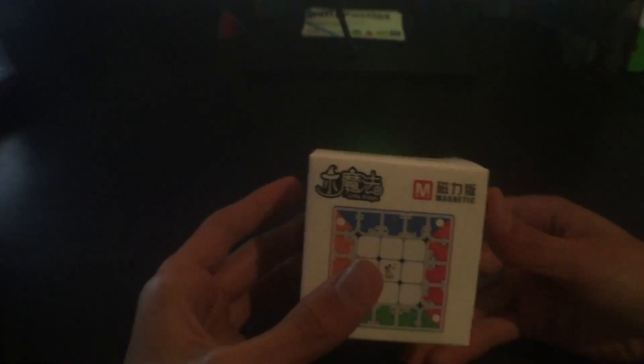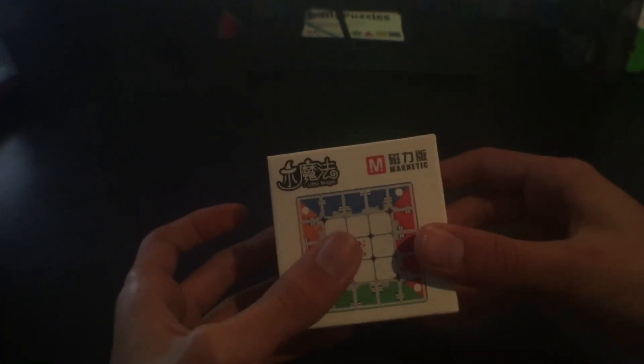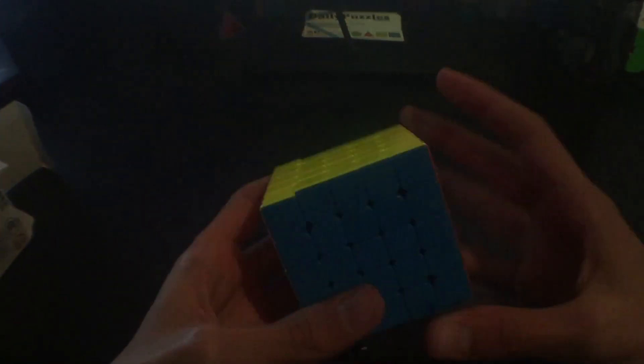Now finally on to the YuXin Little Magic M, so this is the puzzle I've been waiting for, the magnetic 5x5 which I have tried at comps and it does appeal to me a lot. Hopefully it's really nice. It comes with this nice pamphlet which is really big.